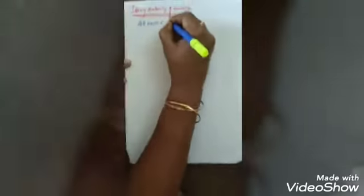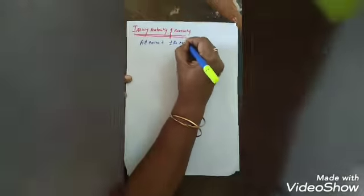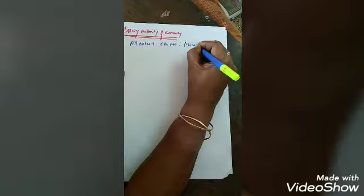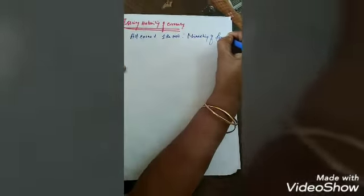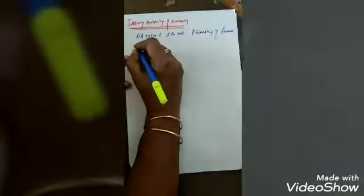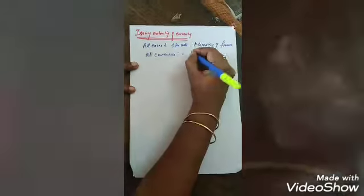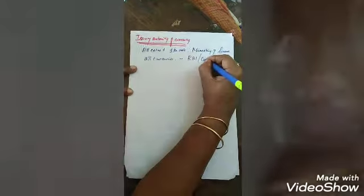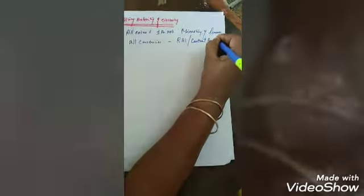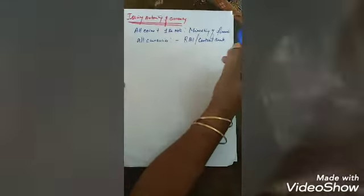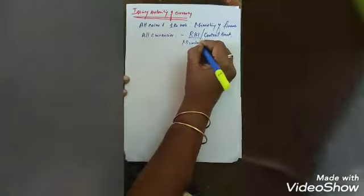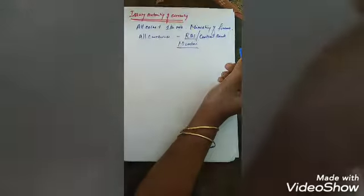Who is the issuing authority of our currency? All coins plus the one rupee note will be issued by the Ministry of Finance. Other than the one rupee note, all currencies will be issued by the Reserve Bank of India, or the central bank. A very important question: where is the headquarters of the RBI? It is in Mumbai.